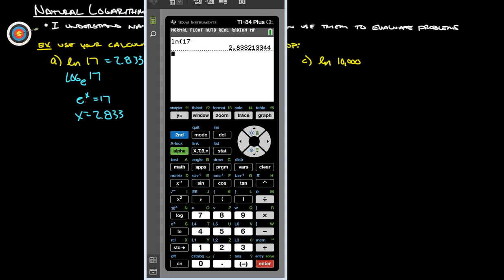So if we pull up our calculator again here, just to show you that this works, we do E to the, and instead of entering our rounded off number, I'm going to actually enter this number back in just to show you that it works. So I'm going to do second answer. So it's going to put this 2.833213344 in there. And guess what? We get 17 back.